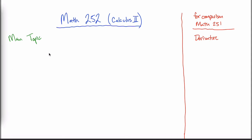It turns out that Math 252 is kind of like Math 251 in that the entire course revolves around one idea — but the idea is not the derivative. The idea is what we will later define to be an integral. An integral and a derivative are very related; in some sense, the integral is sort of the inverse of the derivative. We'll learn something called the antiderivative, which will help us figure out the integral. As 251 was entirely devoted to the derivative, Math 252 will be entirely devoted to the integral.